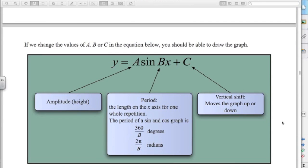So this summarizes what happens when we change the values of a, b and c. b tells you how many times the graph repeats in 360 or 2 pi. And you can work out the period using these formulas here. So for example if b is equal to 2, it repeats twice in 360 and the period is now 360 divided by 2, 180. c just moves the graph up and down.